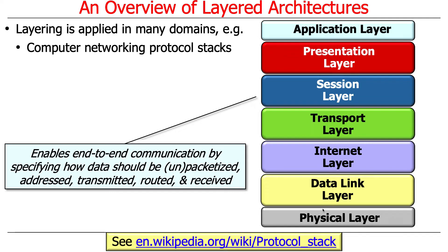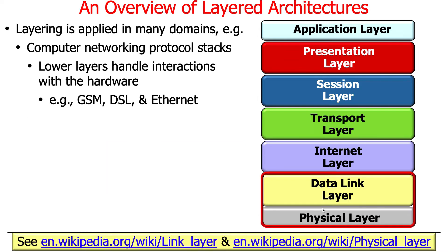Protocol stacks enable end-to-end communication by specifying how data is broken up into chunks, how it's addressed to reach its destination, how it's transmitted, routed, received, and reassembled. There are different layers in a protocol stack — seven or four, depending on which abstraction you're dealing with.